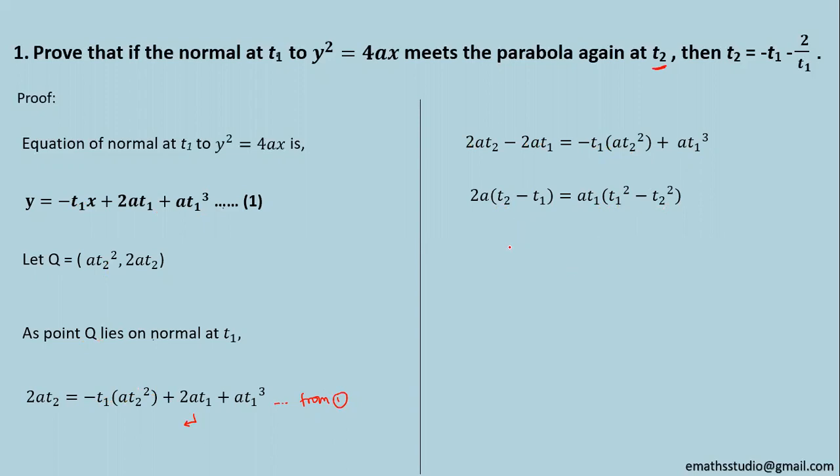In next step from left hand side I have taken minus sign common from this bracket. While on right hand side this at₁ I kept as is and t₁² - t₂² can be factorized as (t₁ + t₂)(t₁ - t₂). Now you can cancel t₁ - t₂ on both sides as well as a. Left hand side simply remains -2 and right hand side is t₁(t₁ + t₂).